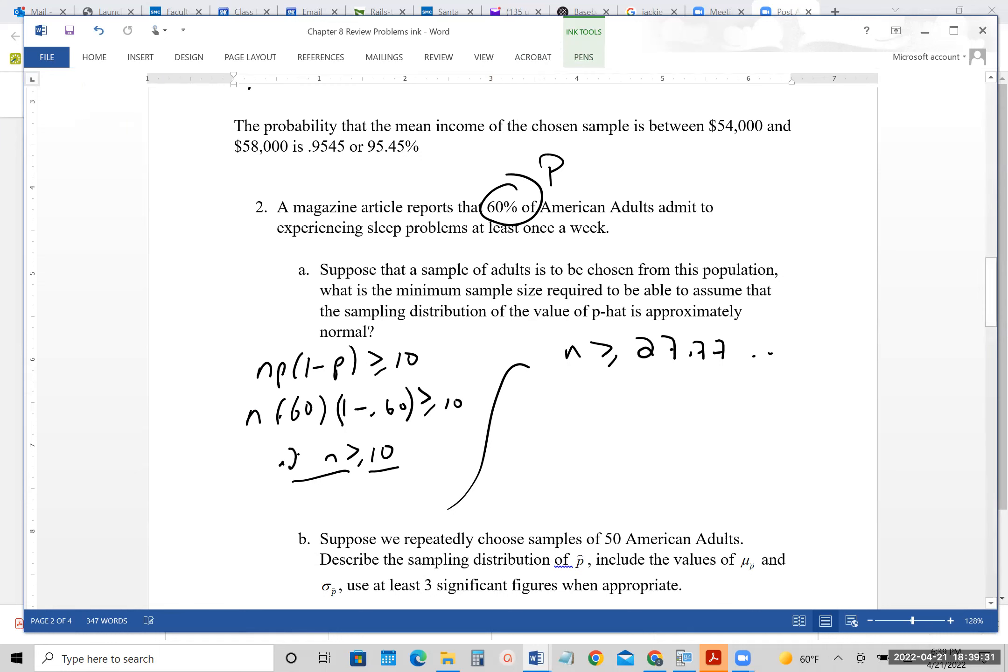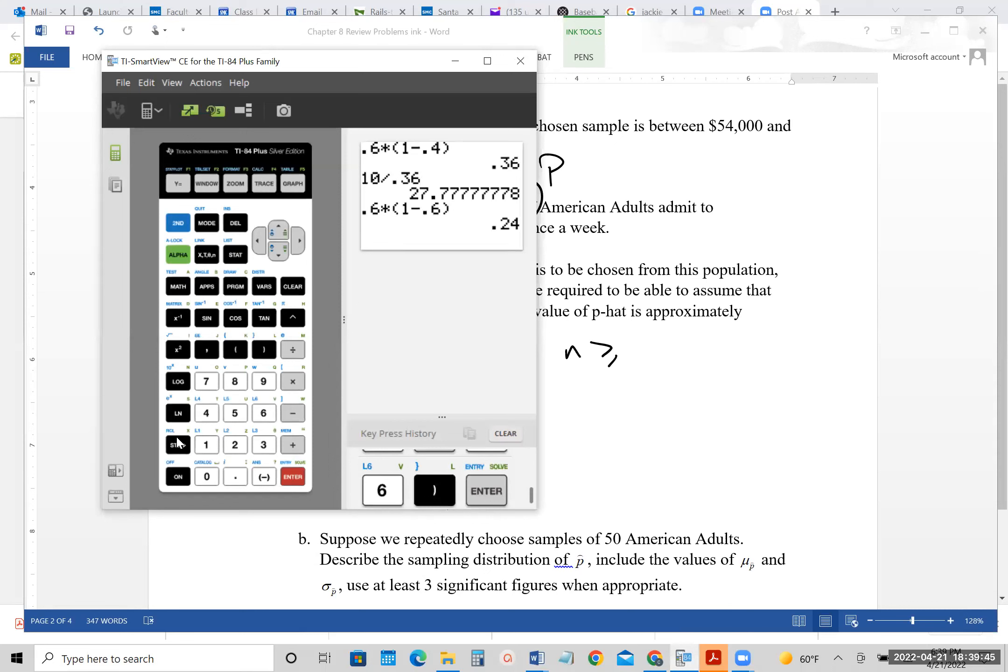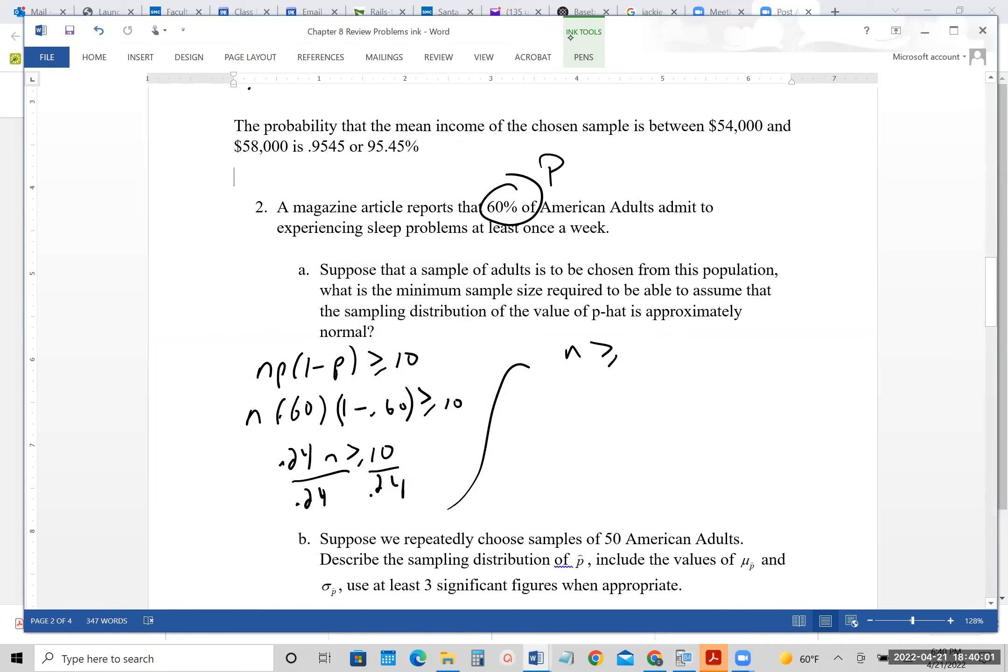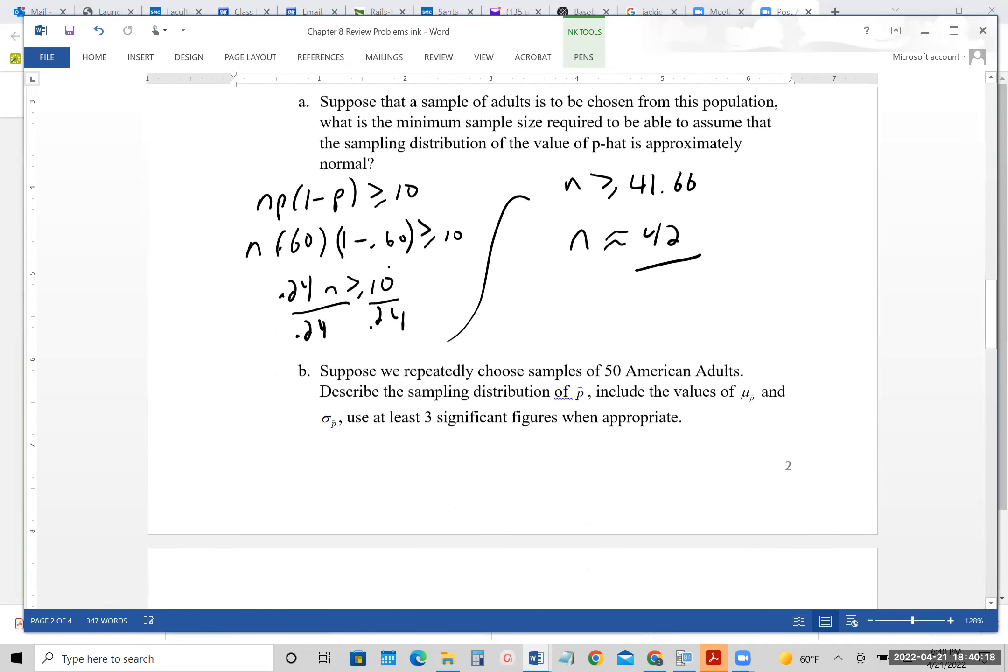So this will be 0.24. We're going to have to divide both sides by 0.24. And we're going to get a slightly different answer. So that is my mistake. But as you can see, it happens, even to the best of us. And we get 41.666. So I would say N has to be roughly 42. So that would be the minimum sample size. So anything we picked that would be bigger than that would be fine. So that would be my part A.